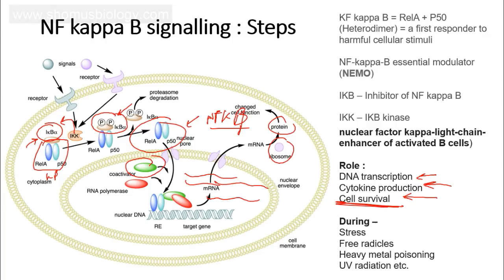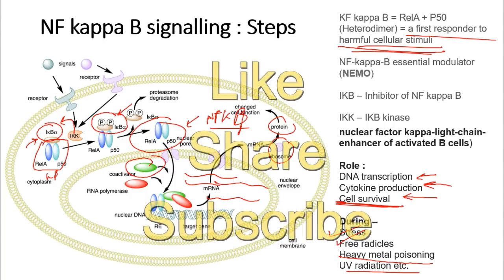That is the beauty of NF-kappa B signaling. Remember why it's unique: it is the very first responder to any kind of harmful cellular stimuli from outside, occurring during stress, free radical damage, heavy metal poisoning, UV radiation, and so on. If you liked this video, please hit the like button, share it with your friends, and subscribe to my channel to get more videos like this one. Thank you.